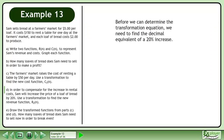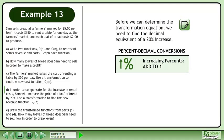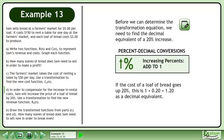Before we can determine the transformation equation, we need to find the decimal equivalent of a 20% increase. Recall that when you are dealing with increasing percents, their decimal equivalent must be added to 1. If the cost of a loaf of bread goes up 20%, add 0.20 to 1 to get 1.20 as a decimal equivalent.